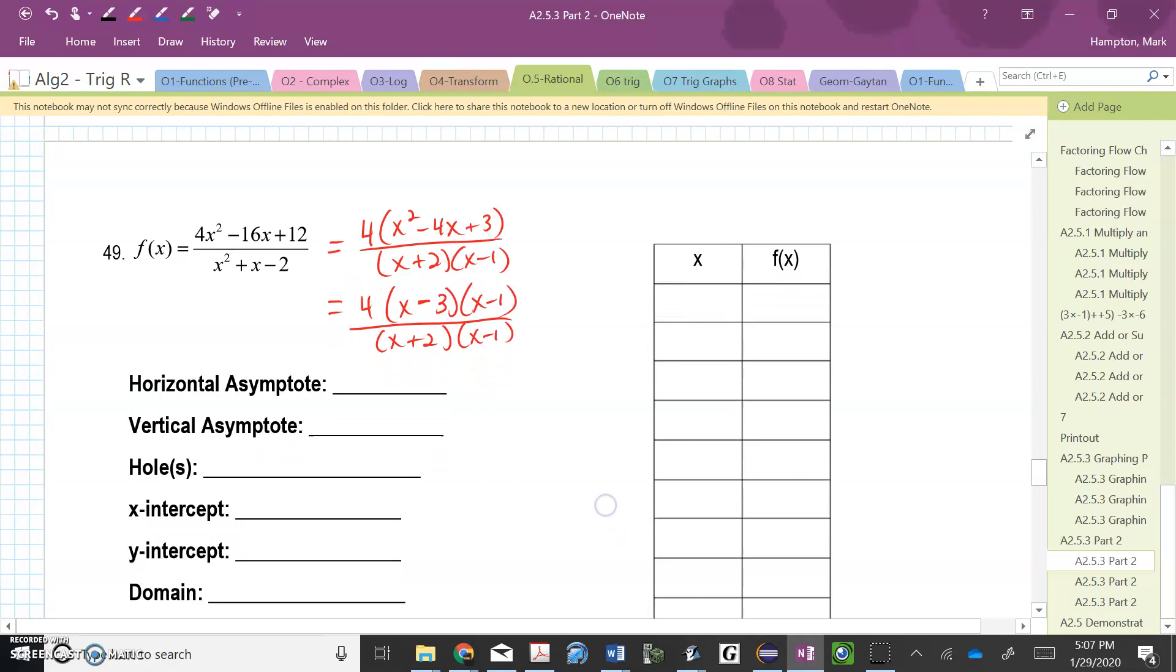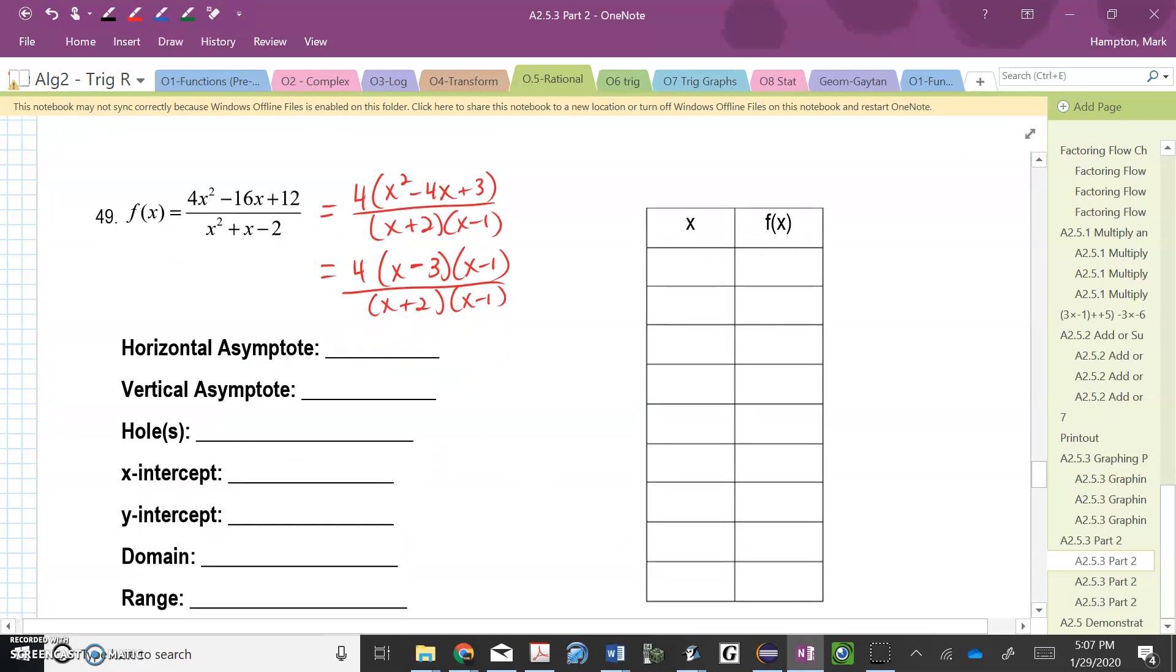So if I go through the process of identifying all the different parts for this thing, I can see that there is a vertical asymptote at X equals negative 2. There's a hole at X equals 1. I still need to find the coordinate of that hole. So it's going to be at 1 comma something, which I don't know yet. The X intercept is going to be at X equals 3. So that means that the coordinate 3 comma 0.